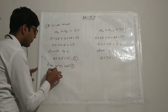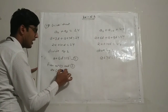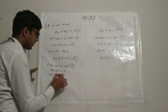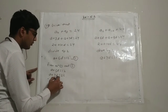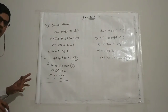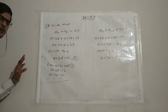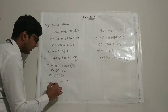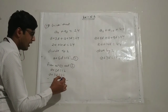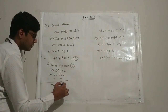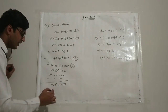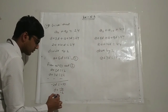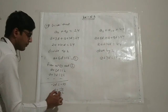Subtracting equation one from equation two: (a plus 7d) minus (a plus 5d) equals 22 minus 12, so 2d equals 10, therefore d equals 5.